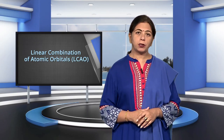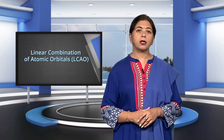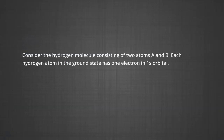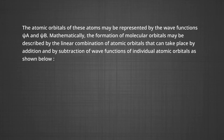Let us apply this method to the homonuclear diatomic hydrogen molecule. Consider the hydrogen molecule consisting of two atoms A and B. Each hydrogen atom in the ground state has one electron in 1s orbital. The atomic orbitals of these atoms may be represented by wave functions ψ_A and ψ_B. Mathematically, the formation of molecular orbitals may be described by the linear combination of atomic orbitals, which can take place by addition and by subtraction of wave functions of individual atomic orbitals.